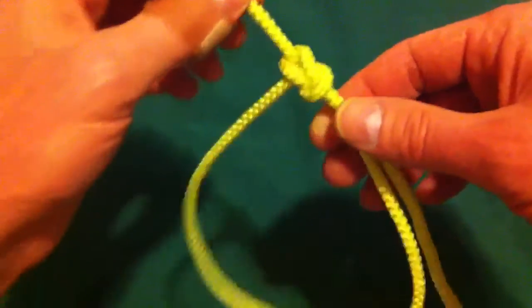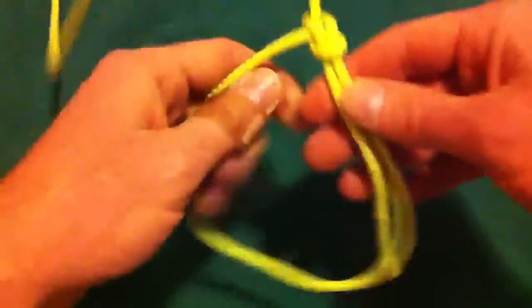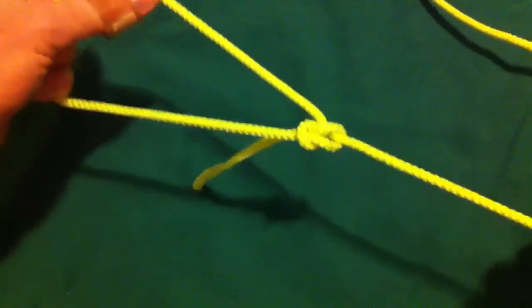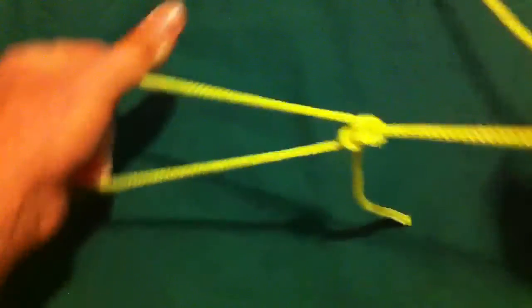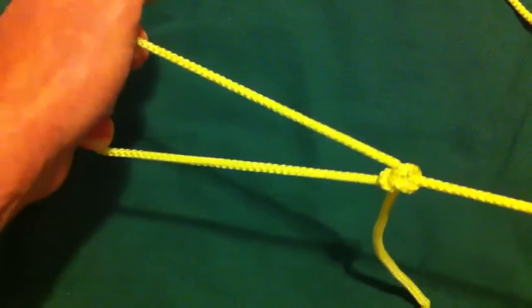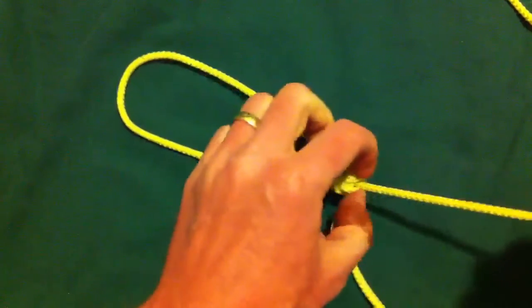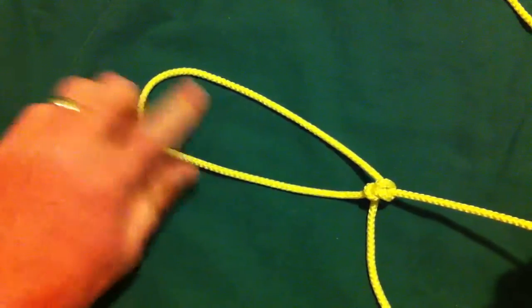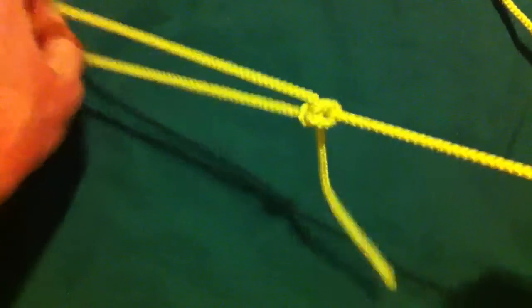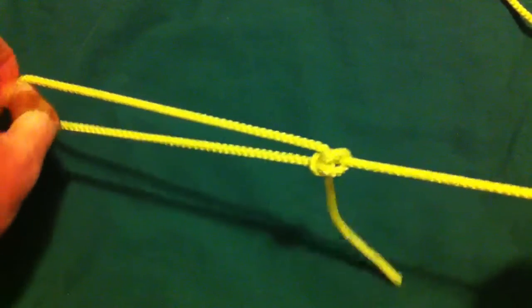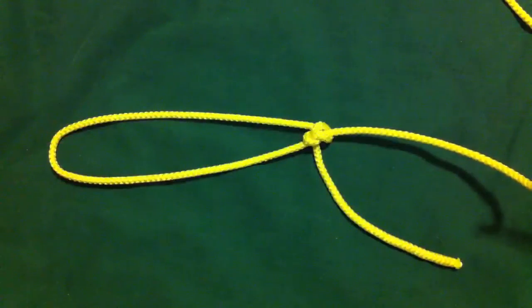The nice thing about the bowline is that when tied correctly, you can pull as hard as you want and that thing is not going to move. Unlike the two half hitches, which would just cinch right up to the end of the pole, this is not going to move. Love it.